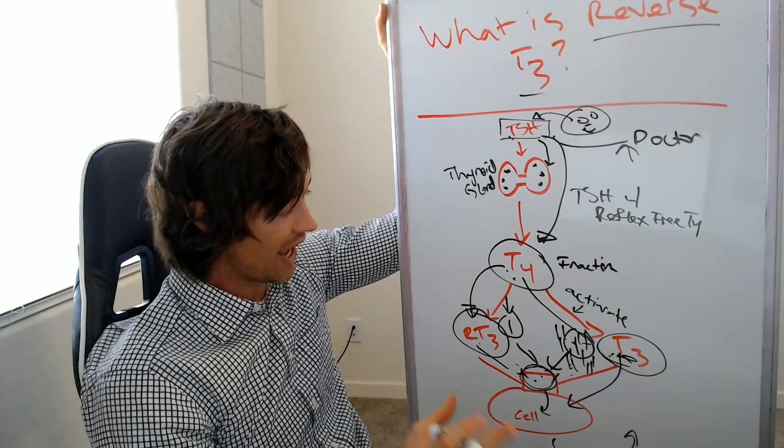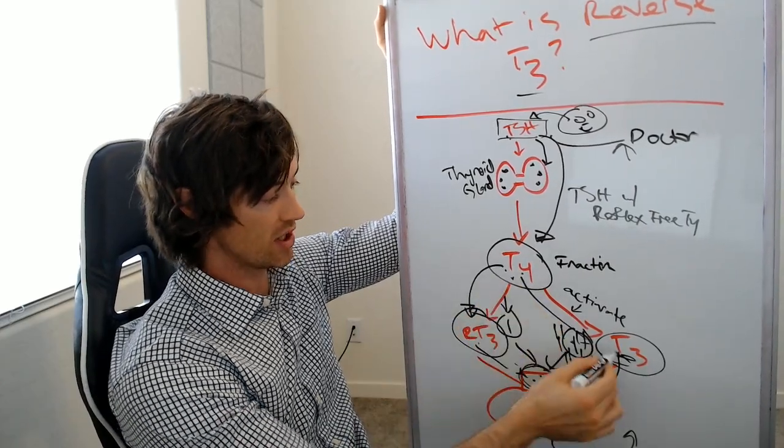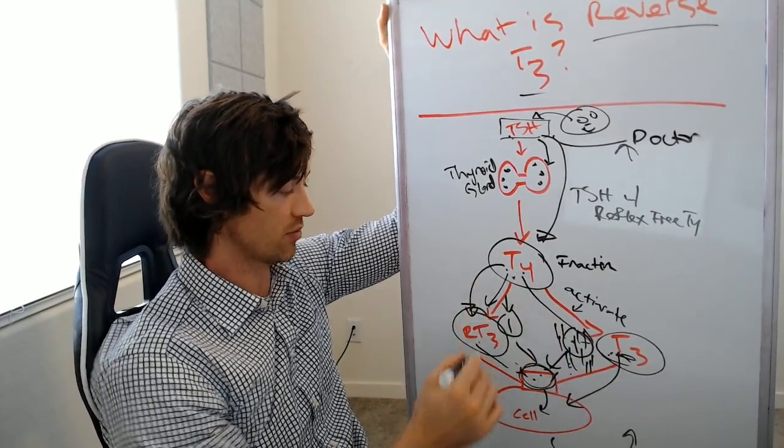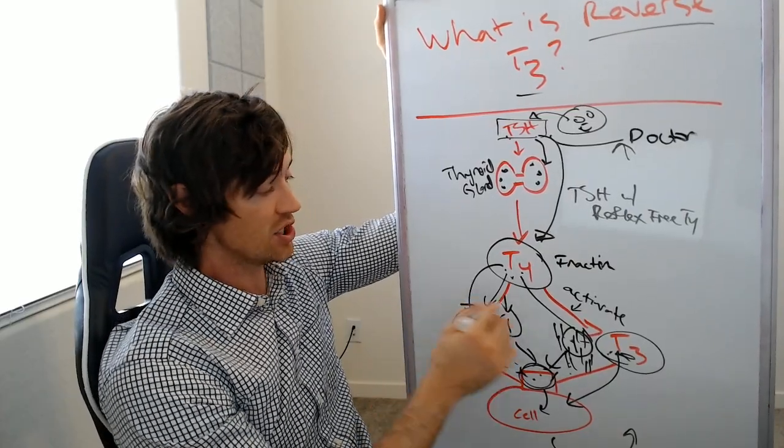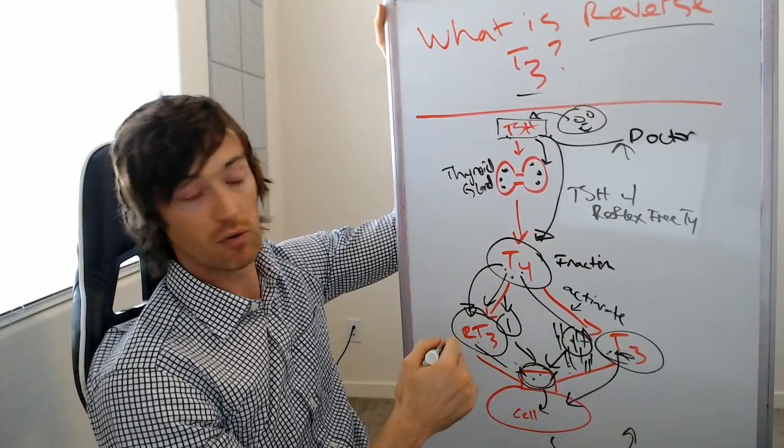But what can happen is your body, instead of turning T4 into T3, it can actually turn it into reverse T3. And there are many things which cause your body to, instead of create T3, to create reverse T3.